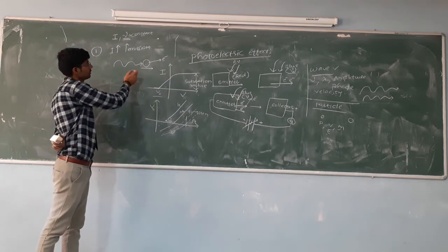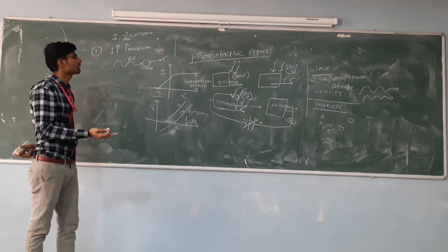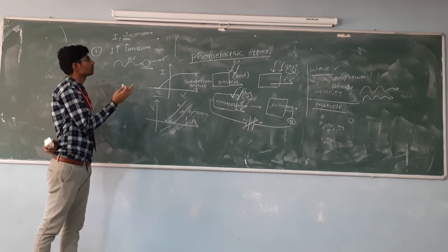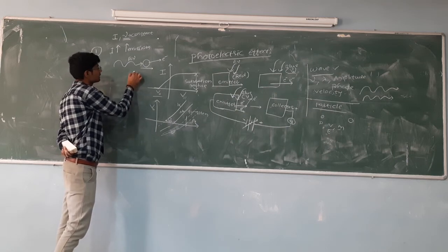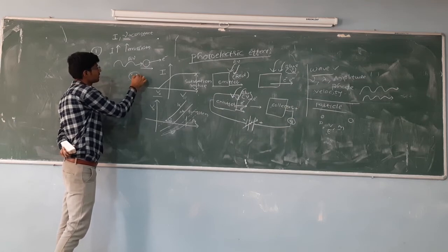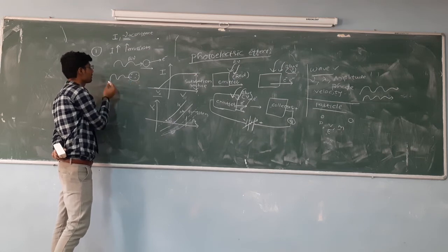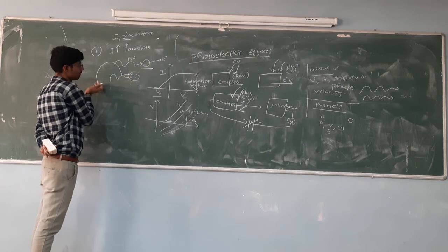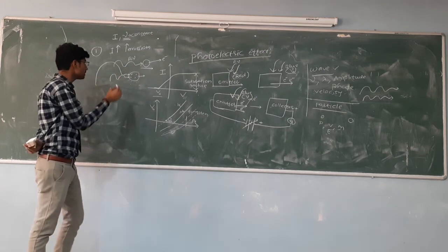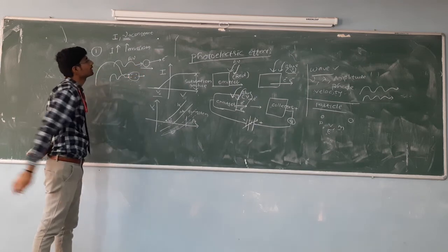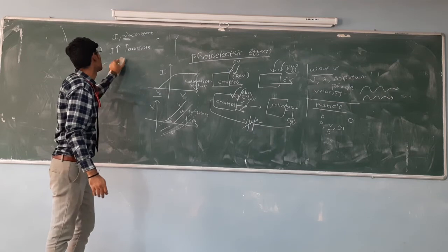However, in the classical wave case, there is no direct interaction between the atom and the photon. In the particle picture, there is a direct interaction which is why electrons get emitted. As an analogy, consider a tree in the sea with fruits. If the wave amplitude is small, no fruits fall down; if we increase the amplitude, still no fruits fall — there is no direct interaction in classical wave theory, so it fails to explain photoelectric emission.